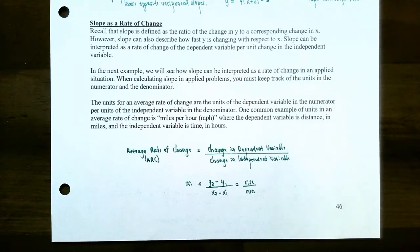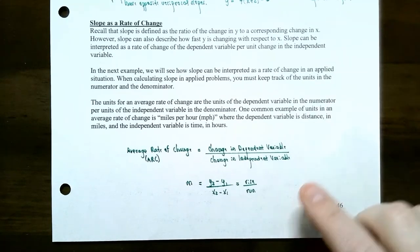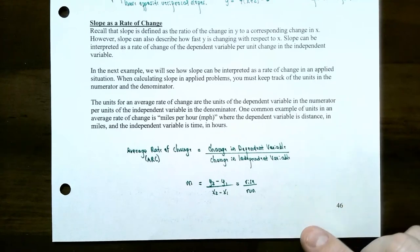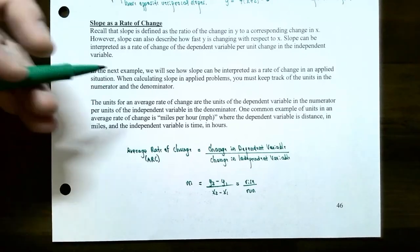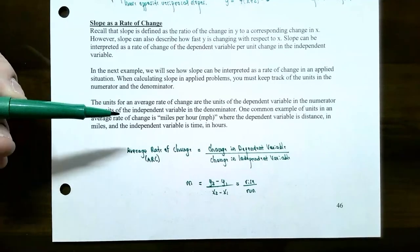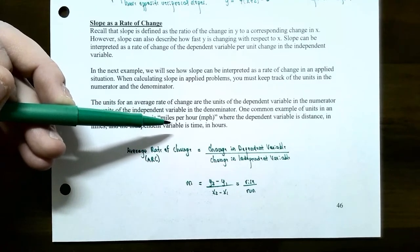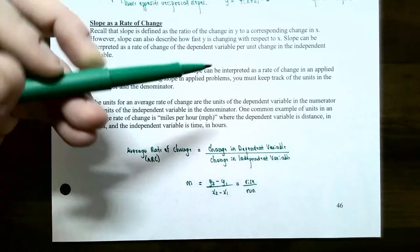How much does one variable change — that's in terms of units — compared to how much does the other variable change, also in terms of those units. Here's how you can determine the units for an average rate of change: you keep track of the units of the numerator, or the dependent variable, and the units for the independent variable, or the denominator. A very common example of a rate of change is miles per hour. The word 'per' denotes a rate of change or a ratio — miles per hour, or MPH.